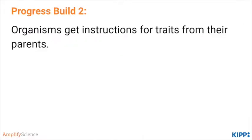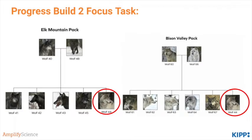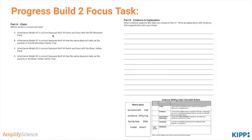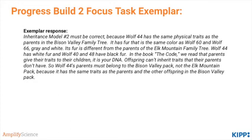Ultimately, students need to understand for Progress Build 2 that organisms get instructions for traits from their parents. For the Progress Build 2 focus task, they return to the wolf mystery, and students' job is to make a claim about which family tree Wolf 44 is a part of — who exactly are his parents, the wolves with the white fur or the wolves with the black fur? Students choose a claim and then support that claim in writing with evidence and an explanation. Note that this explanation uses evidence from the book The Code, as well as evidence within the family trees in the focus task.